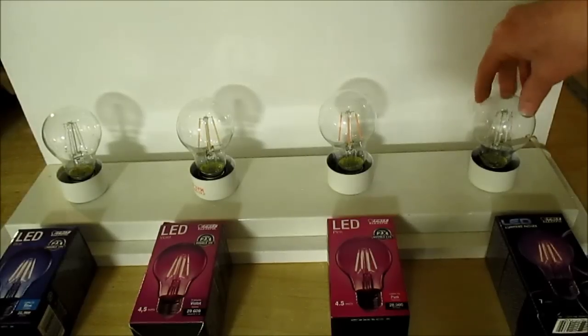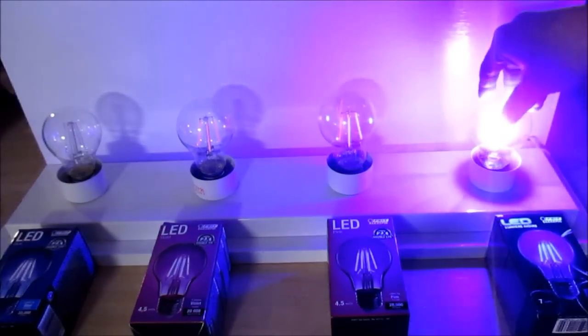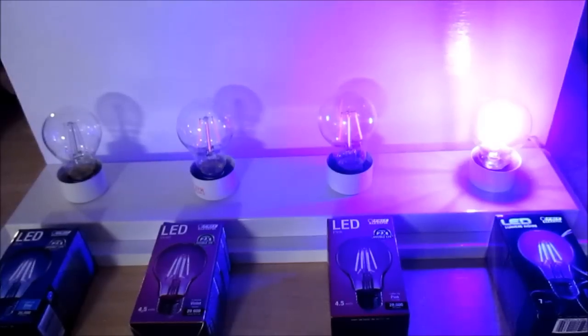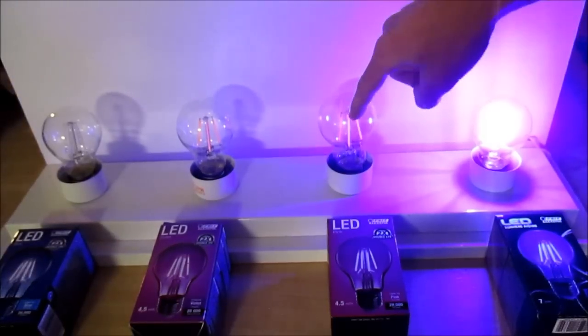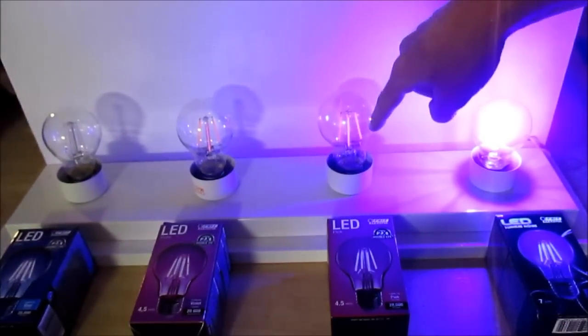And last but not least is the black light bulb. The camera makes it look really bright, but to the eyes it looks like it's barely going. In fact, the UV makes the phosphor coating on this bulb glow.